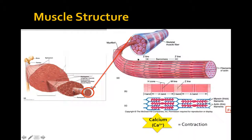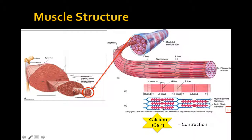Looking even more closely, the myosin globular heads bind to the actin, which is a thin, sturdy structure, and are pulled together toward the middle. When this happens all the way down the line, the muscle shortens, causing a contraction. Calcium is a major player that allows muscle contractions to occur—that's key to remember.